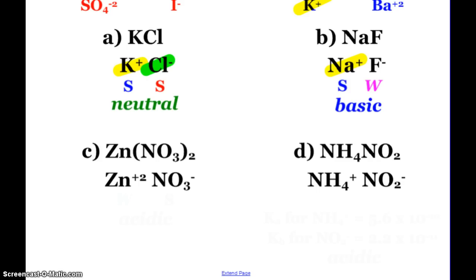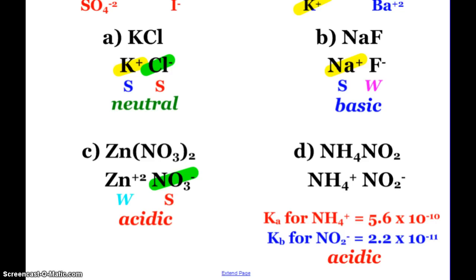Next, we have zinc nitrate. Zinc does not come from our strongs, but nitrate does — from nitric acid. So in this situation, weak cation and strong anion gives us an acidic solution. Lastly, letter D: ammonium nitrite. Both of those are weak, so I would have to check my K values — Ka for ammonium versus Kb for nitrite. Ka is greater than Kb, so this gives an acidic solution.